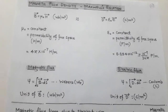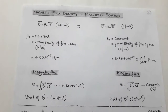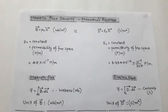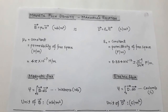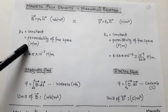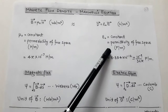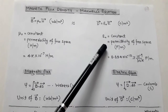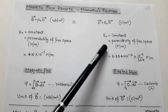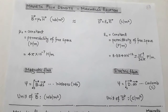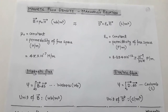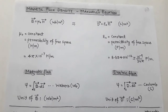In the case of magnetic flux density, there is a constant called μ₀, which is called the permeability of free space. Its unit is henry per meter. In the case of electrostatics, ε₀ is a constant called the permittivity of free space, and its unit is farad per meter. This is a similarity between magnetic flux density and electric flux density.